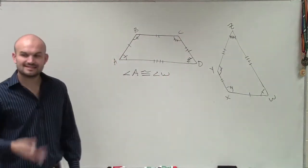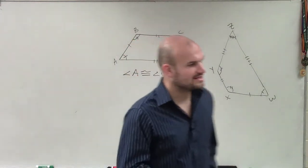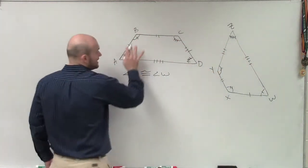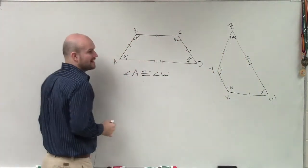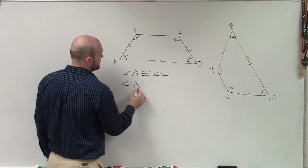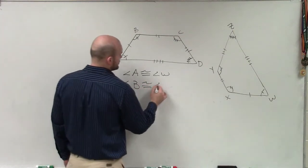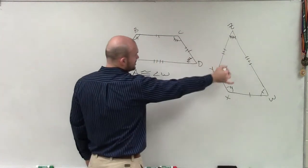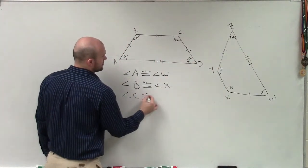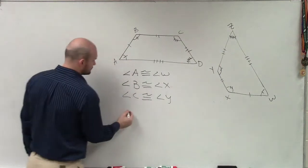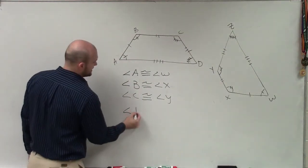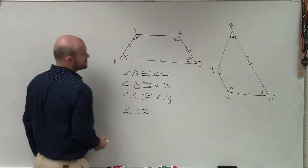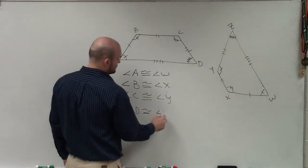And I'm just going to continue this pattern with the rest of the angles going around. So now B has two tick marks. That's going to be corresponding to X. So I can say angle B is congruent to angle X. Angle C, three tick marks, is going to be congruent to angle Y. And angle D is going to be congruent to angle Z.